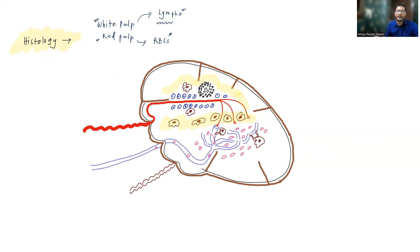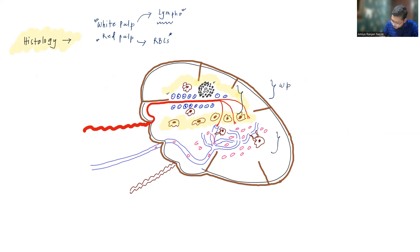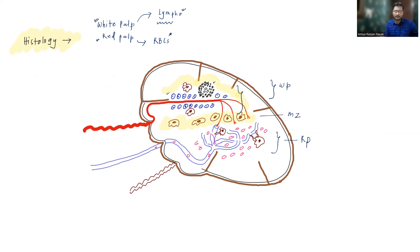There is one more zone between white pulp and red pulp, known as the marginal zone. In this diagram, the upper area with lymphocytes is the white pulp, the area full of RBCs is the red pulp, and in between is a transition area known as the marginal zone. We will try to understand each aspect of the spleen.